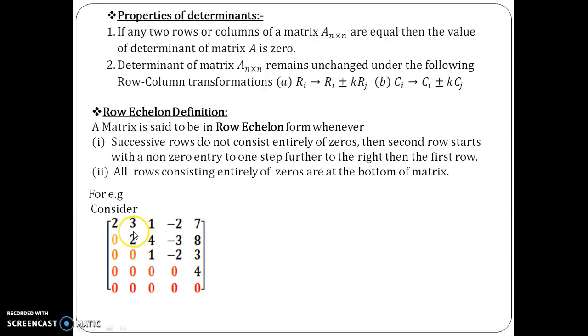It is starting from one step to the right. Same way over here if you see, between the second and the third row, it is starting one step to the right. It is not exactly below 2, it is below 4 over here. Now, if you focus over here, instead of going one step, it has gone two steps. That is allowed.